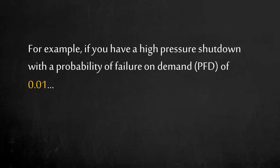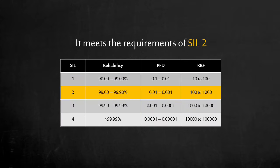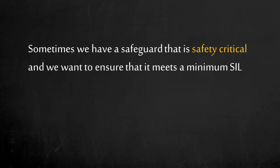For example, let's say we have a high-pressure shutdown that has a probability of failure on demand of 0.01, or in other words, 1% chance of failure on demand. The high-pressure shutdown meets the requirements of SIL 2. Safety functions that meet this safety integrity level are capable of achieving a risk reduction factor of 100 to 1000. This is a key concept here. Depending on the specific process, other protection layers in place, and the tolerable frequency of a consequence, an automated function may be safety critical and need to meet a minimum safety integrity level.